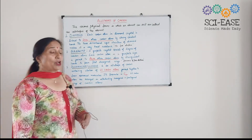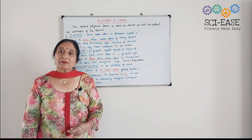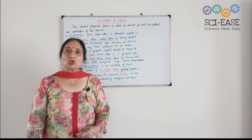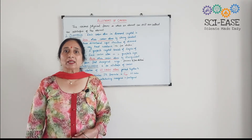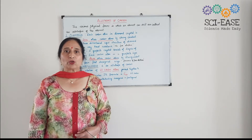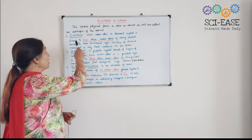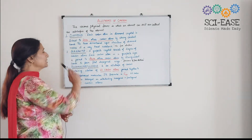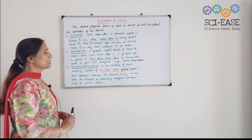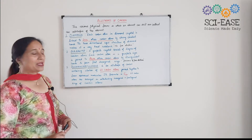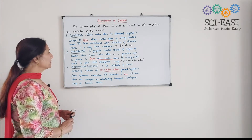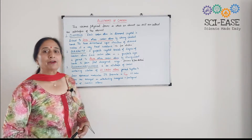Now, in case of carbon, in solid form, there are three allotropes. One is diamond, the second one is graphite, and the third one is buckminster fullerene.